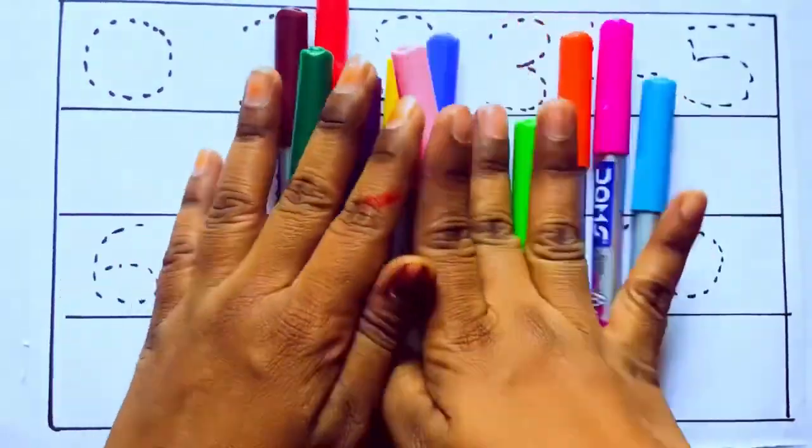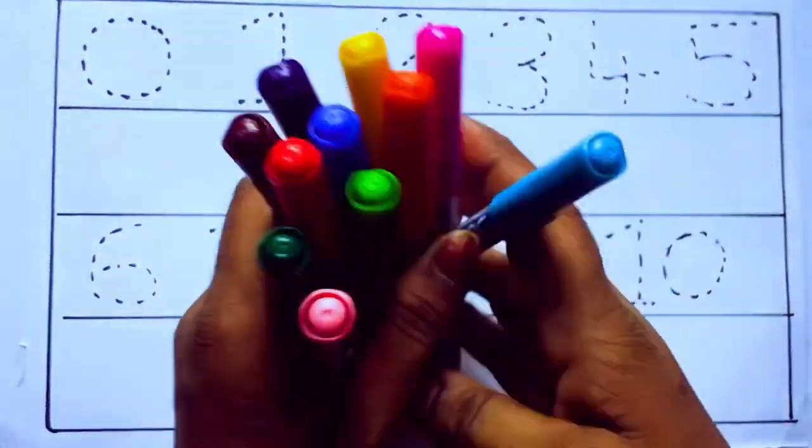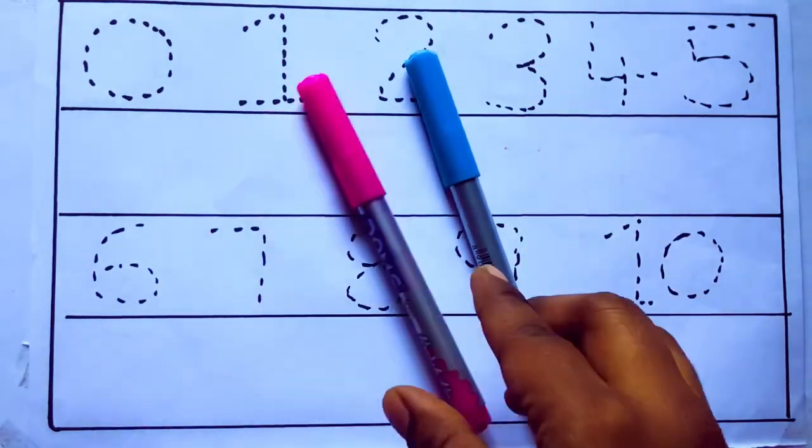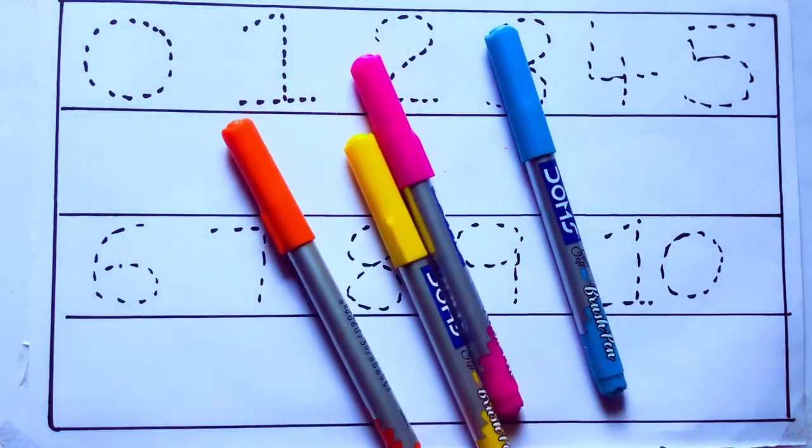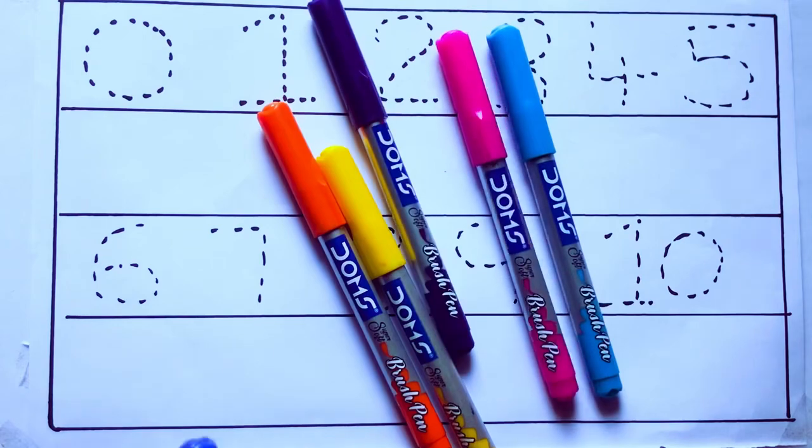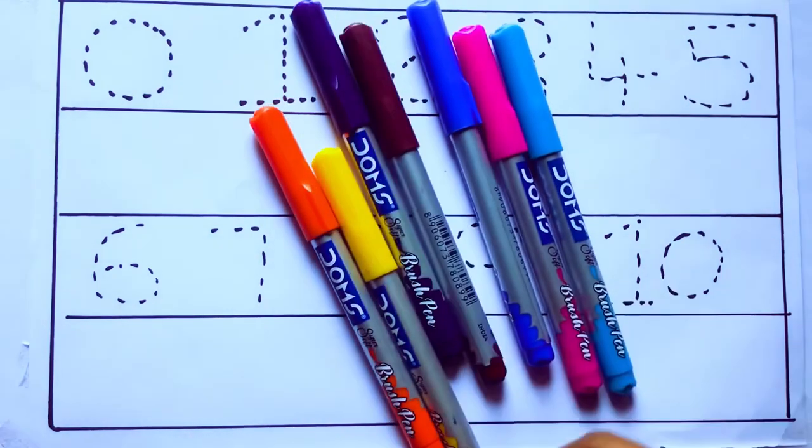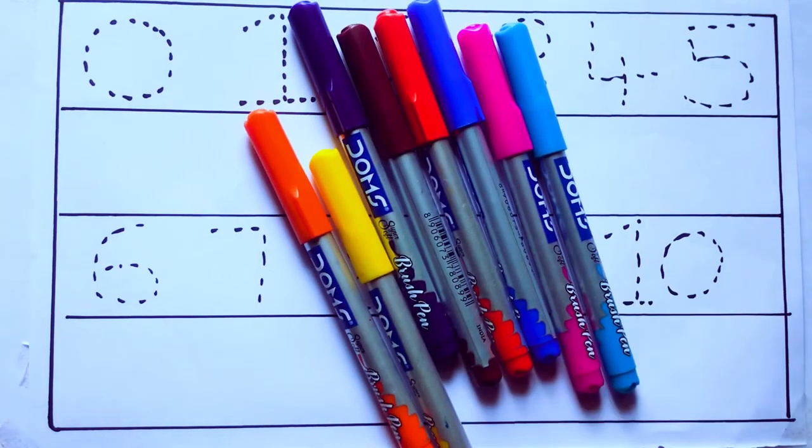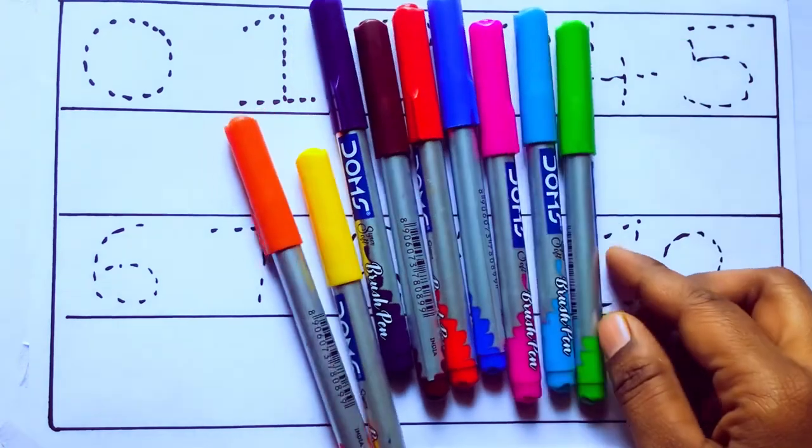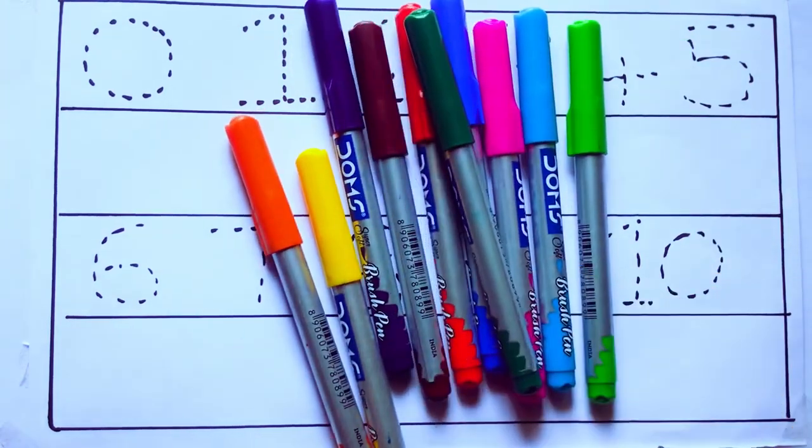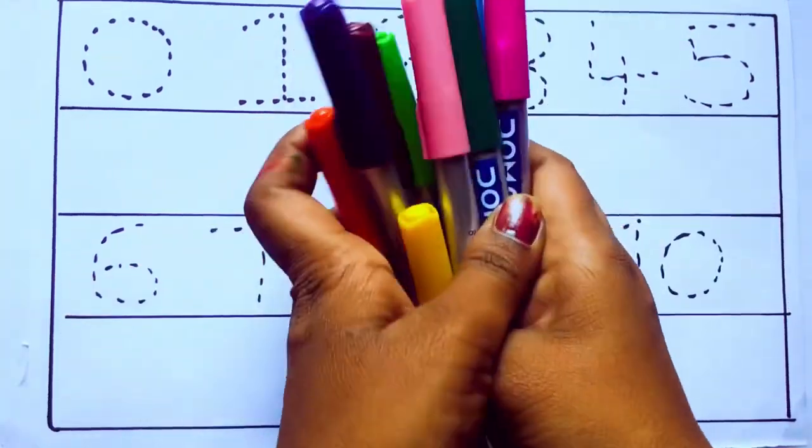These are all the color pencils. Let's learn the names: sky blue color, pink color, yellow color, orange color, violet color, blue color, brown color, red color, green color, and pink color.